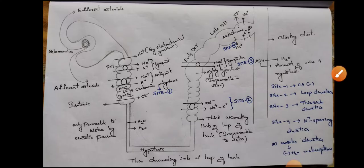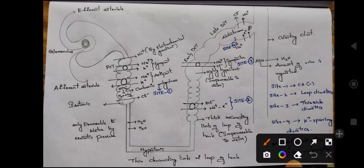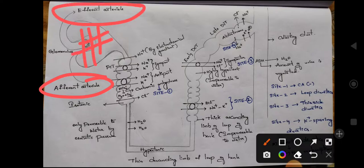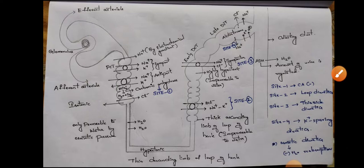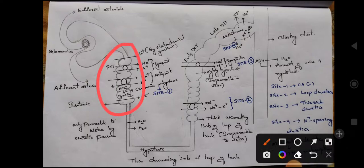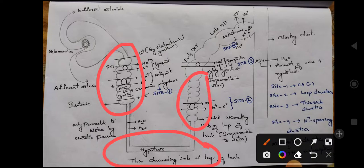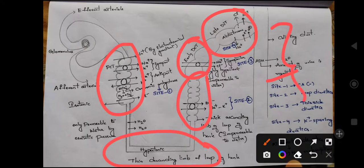Now I am going to the anatomy of the nephron. The nephron includes the afferent arteriole and efferent arteriole. The cluster of blood vessels is the glomerulus — this is the first stage of urine formation, glomerular filtration. Then we have the PCT, which is the proximal convoluted tubule, the thin descending limb of the loop of Henle, the thick ascending limb, the early distal convoluted tubule, the late distal convoluted tubule, and finally the collecting duct.